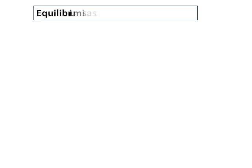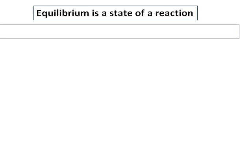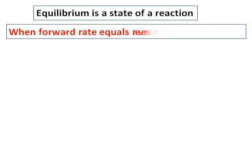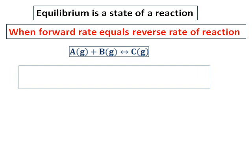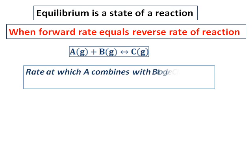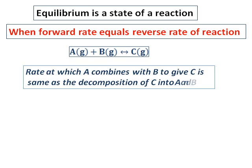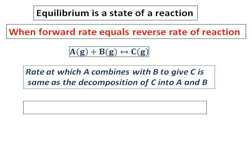So what is equilibrium? Equilibrium is a state of a reaction when the forward rate equals the reverse rate of reaction. Suppose you have a reaction A combining with B to give you C — what I mean by that is the rate at which A combines with B to give C is the same as the decomposition of C into A and B.